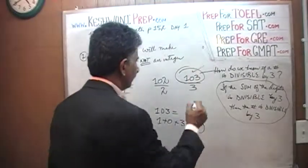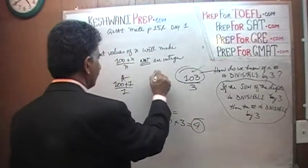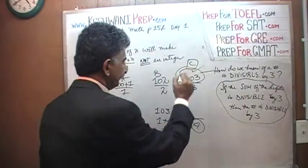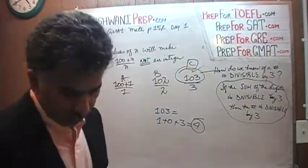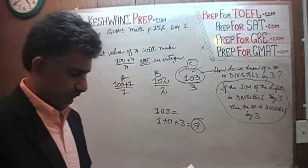That's your answer. So n equals 1 was A, n equals 2 was B — the answer is C. 103 divided by 3 does not give you an integer.